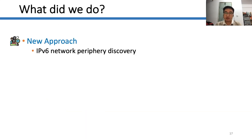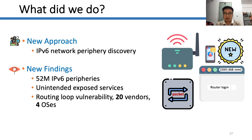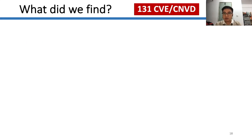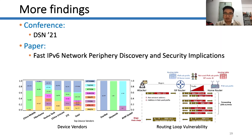With XMap, we evaluated the first IPv6 network periphery discovery approach. We found more than 50 million IPv6 peripheries, and many of them exposed unintended services to the internet. Besides, we found a routing loop vulnerability which affects at least 20 router vendors and 4 OSes. In the end, we received 131 vulnerability numbers. Our research has been presented at the DSN 2021 conference, and for more information you can check our paper.